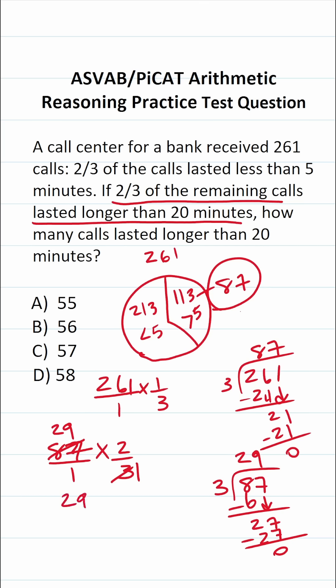This becomes 29 over one, which is 29 times two over one, which is two. So to get our answer, we're going to do 29 times two. Nine times two is 18. Carry a one. Two times two is four plus one is five. So 58 of the 87 remaining calls were longer than 20 minutes. So this one is D.